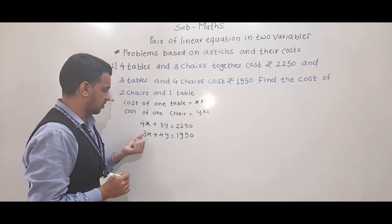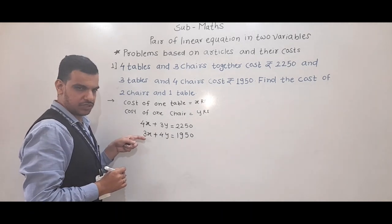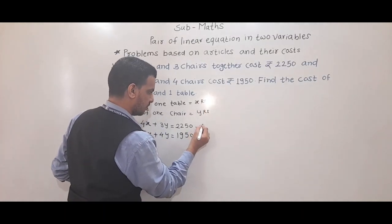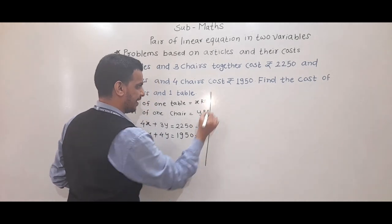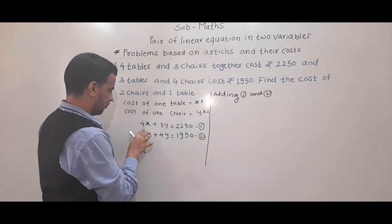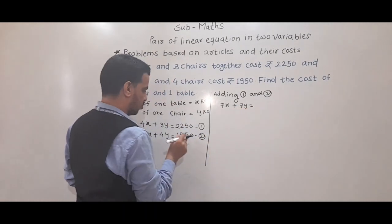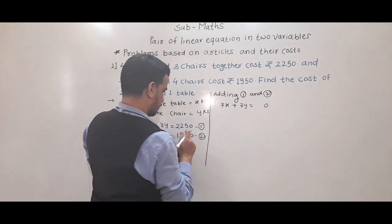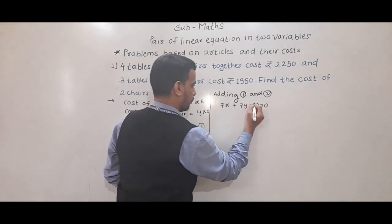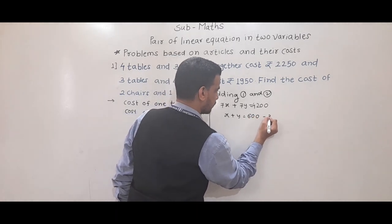The equations are 4x plus 3y and 3x plus 4y. In this type we can add and subtract the equations to get two new equations. Adding equation 1 and 2: 4x plus 3x gives 7x, 3y plus 4y gives 7y, and 2250 plus 1950 gives 4200. Dividing by 7 we get x plus y equals 600. This is equation 3.